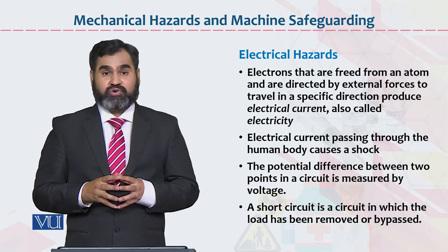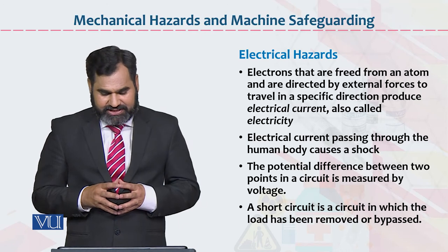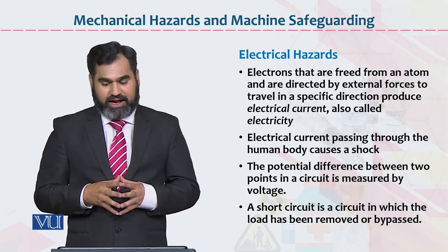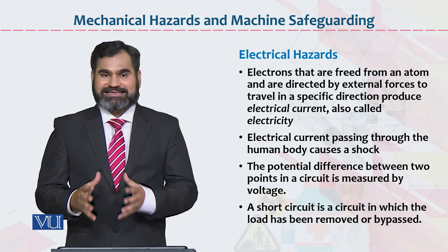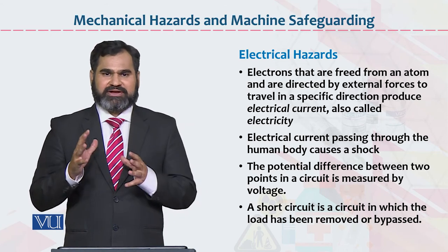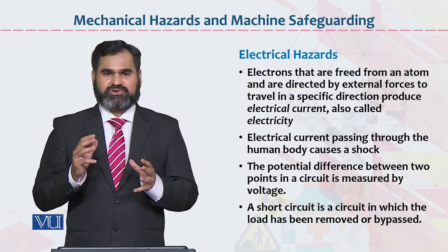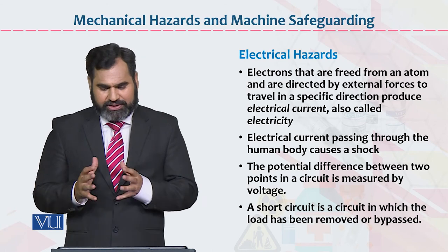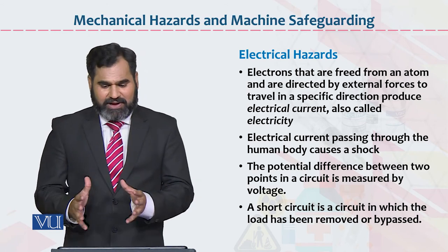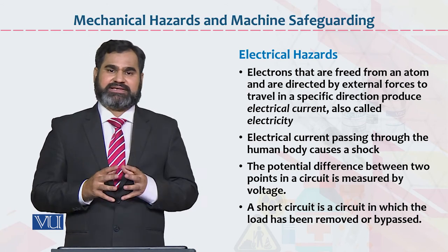The potential difference between two points in a circuit is measured by voltage. A short circuit is a circuit in which the load has been removed or bypassed. Yeh technical terminologies hain — ek positive hai, ek negative hai, ek neutron hai, ek mein load hai, ek bypass hai.